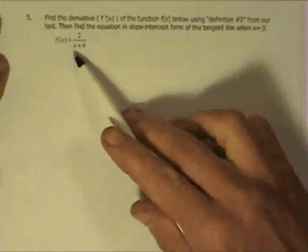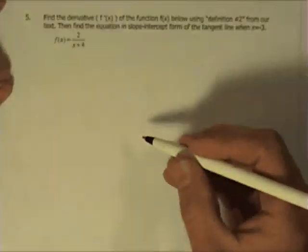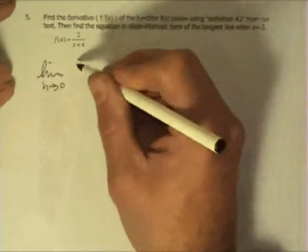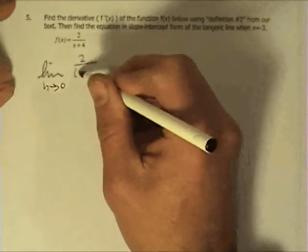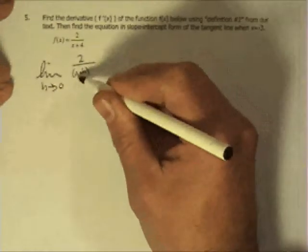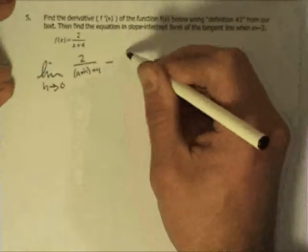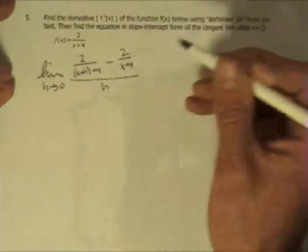Okay, on to the last page here. We are asked to find the derivative, f prime of x, of this function right here, 2 over x plus 4, using the definition from the last section in the book. That's the one that has h in the bottom as we used it. So, I will write the limit as h approaches 0 of our function 2 over x plus h plus 4, and then minus the function 2 over x plus 4, and then that's all over h.